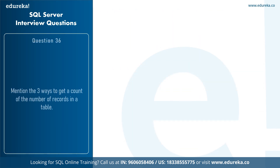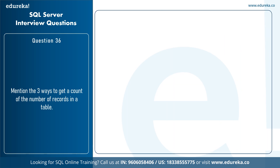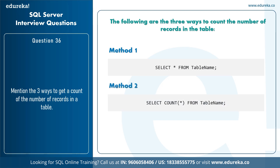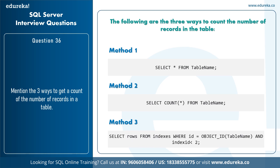The next question is: mention three ways to get a count of the number of records in a table. First, 'SELECT * FROM table_name' retrieves all data, from which you can count records. Second, use the COUNT function: 'SELECT COUNT(*) FROM table_name'. Third, use the system catalog: 'SELECT rows FROM indexes WHERE id = OBJECT_ID(table_name) AND indid < 2'.